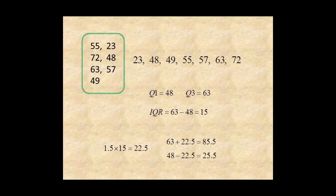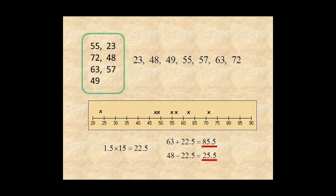These numbers establish new boundaries on the graph. Here's the upper boundary, 85.5, and here's the lower boundary, 25.5. Now, you can clearly see 23 is an outlier.